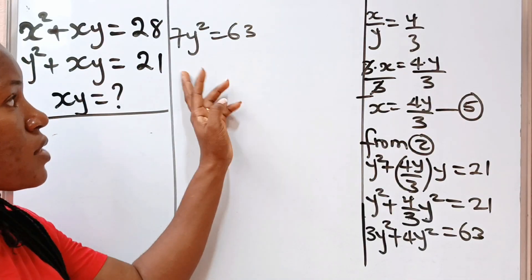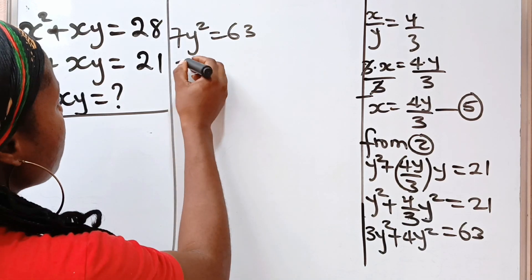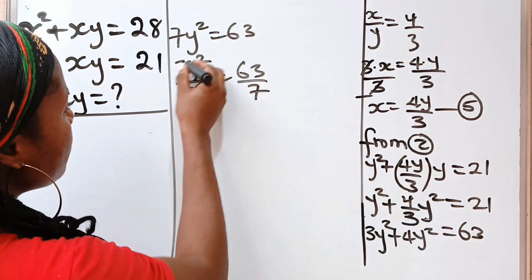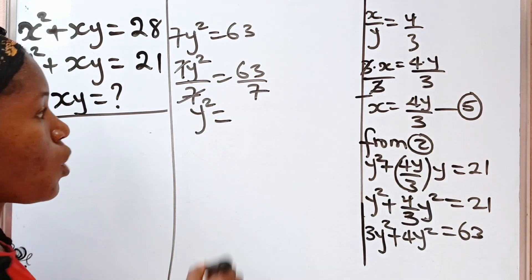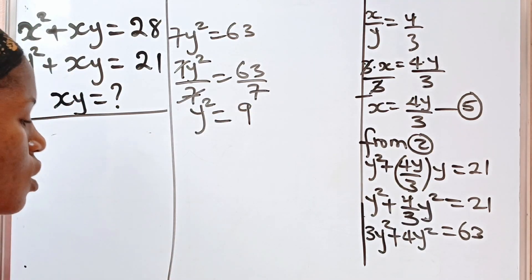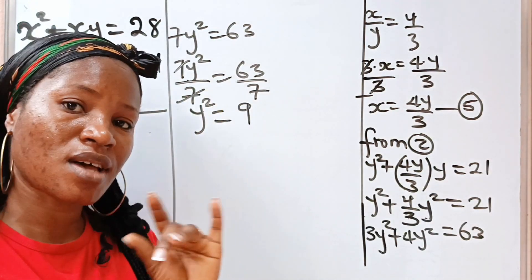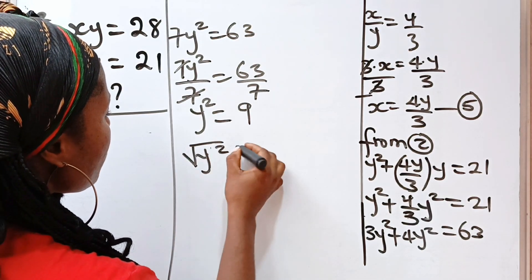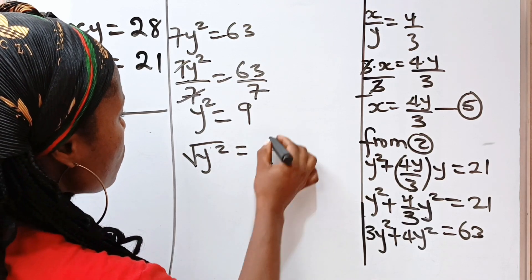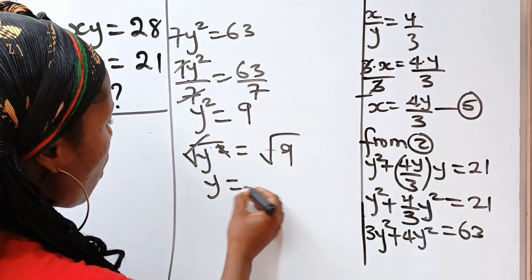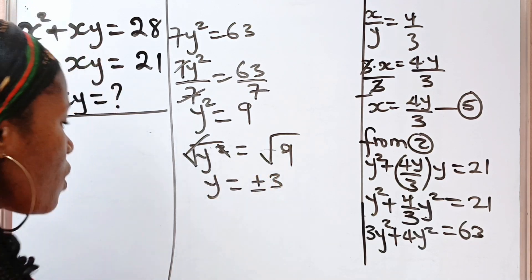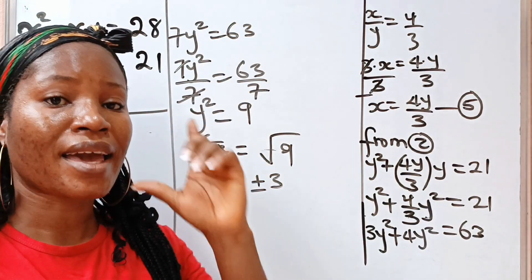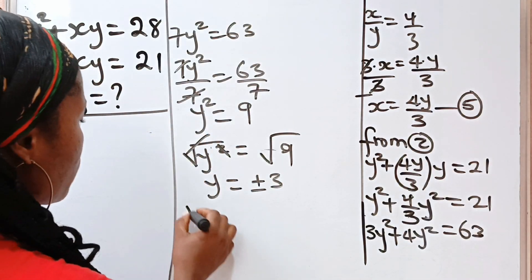To get the value of y, we divide both sides by 7: 7y squared divided by 7 equals 63 divided by 7. We have y squared is equal to 9. Taking the square root of both sides, y is plus or minus 3. So we have two cases: case 1 when y equals 3, and case 2 when y equals minus 3.